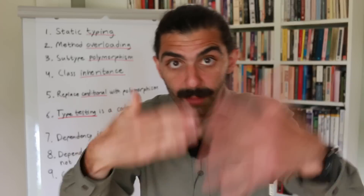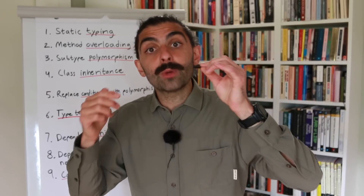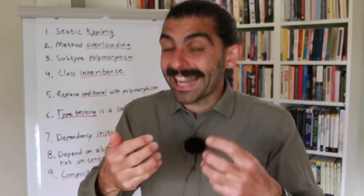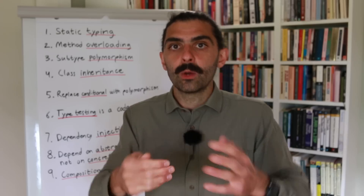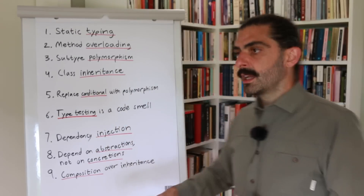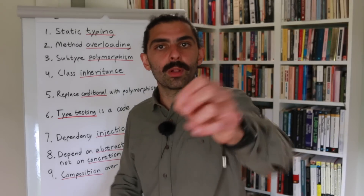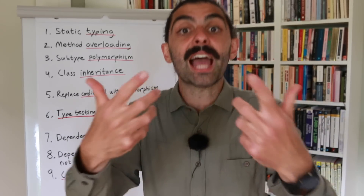Dependency injection is superior to dependency instantiation since it allows us to maintain parametrization without duplicating constructor parameters. In other words, dependency injection allows us to eliminate duplicated code. When using dependency instantiation — not injection — we have to duplicate code in order to achieve the same level of flexibility that we get when using dependency injection. Next, the principle 'depend on abstractions, not on concretions' is sensible because that allows us to vary implementations at runtime.